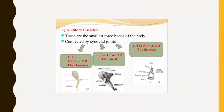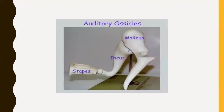In this picture you can see the three ossicles: the malleus bone with its hammer shape, the incus with its anvil shape, and the stapes which is stirrup-shaped and the smallest bone in the body.